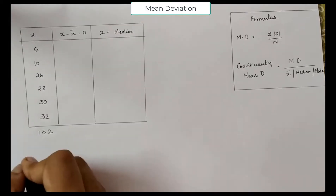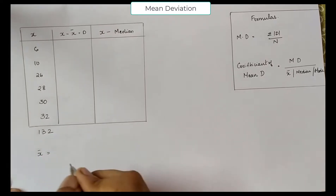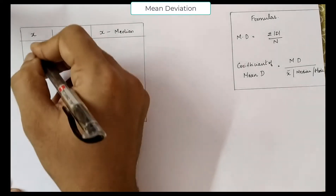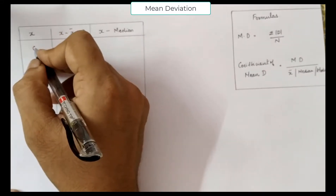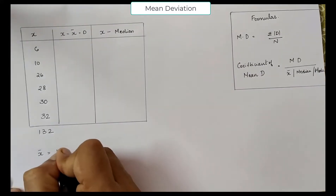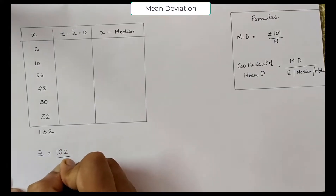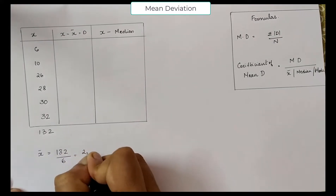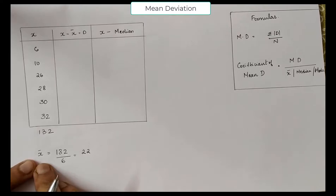When you add up all these values, you get 132. X̄ (mean) is equal to the sum divided by the number of items. There are 6 items, so X̄ is equal to 132 divided by 6, which equals 22. This is the average or mean.